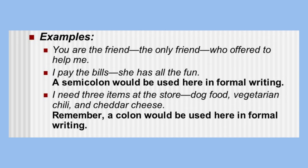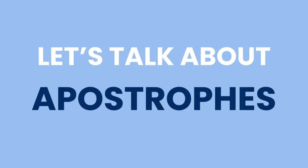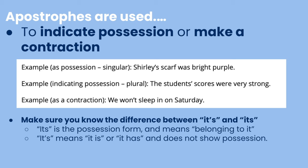Lastly, let's talk about apostrophes. Apostrophes are used to indicate possession or to make a contraction. For singular possession, you use apostrophe-s — for example, 'Shirley's scarf' or 'Maddie's phone.' However, when possession is plural, you do s-apostrophe — for example, 'the students' scores were very strong.' Apostrophes are also used in contractions like don't, won't, can't, etc. What's really important is the difference between 'its' without an apostrophe and 'it's' with one. 'Its' without an apostrophe is the possessive form meaning 'belonging to it,' while 'it's' with an apostrophe means 'it is' or 'it has.' If you're ever confused, replace it with 'it is' and see if the sentence makes sense — if it does, use the apostrophe version; if not, use the one without.